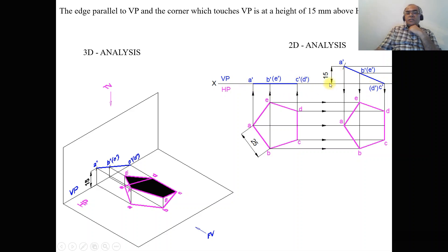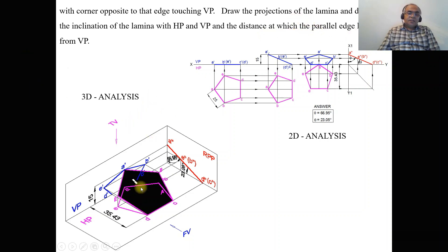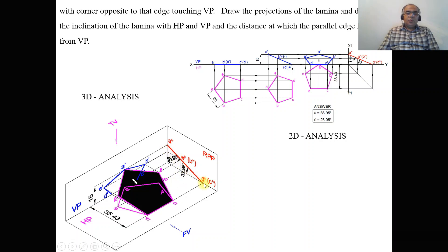In the second position front view, the side opposite to the corner is above HP by 15 mm, and the pentagon is constructed here. In the final position, the corner has to touch VP, and even in the final position the corner is 15 mm above HP. The surface is inclined to both HP and VP, and therefore the surface is perpendicular to the right profile plane.